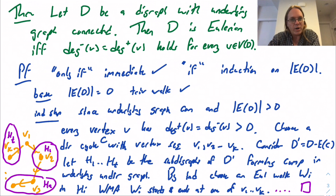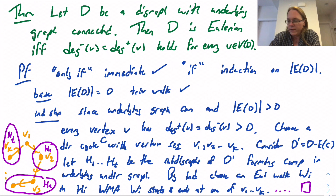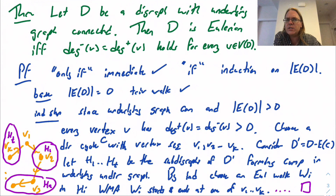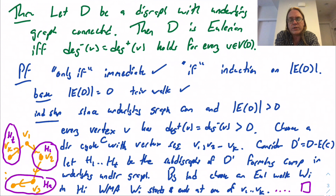There are many different arguments you can use to prove this — there's a different one in the notes that involves choosing a maximal length closed walk in the digraph. This is a case where digraphs behave very similarly to ordinary graphs. Somehow a regular graph where every vertex has even degree is Eulerian, and those graphs behave a little bit like digraphs where every vertex satisfies in-degree equal to out-degree. Those classes share some important similarities, and this is a first instance of that. So that will do it for this lesson on Eulerian.